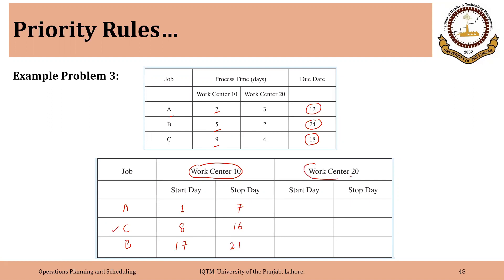Now we move to work center 20, keeping the sequence the same. Job A should start at day 8 at work center 20. It has three days, so it is completed by day 10. Then job C has four days; processing at work center 10 ended on day 16, so it starts on day 17 at work center 20, running through days 17, 18, 19, and 20. For job B, processing on work center 10 ends on day 21. It has two days at work center 20, so it starts at day 22 and ends by day 23.